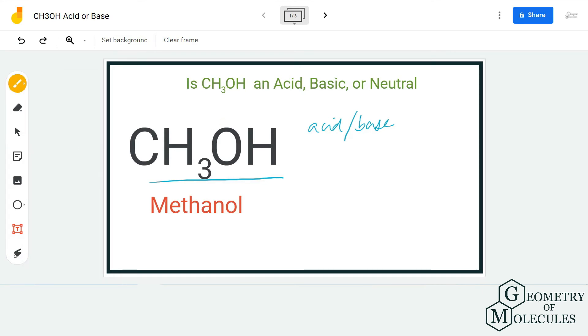Lewis acids. Compounds that accept electrons are known as Lewis acids, and compounds that can donate electrons are known as Lewis bases. Here, as it can donate electrons, it is called a Lewis base. Apart from